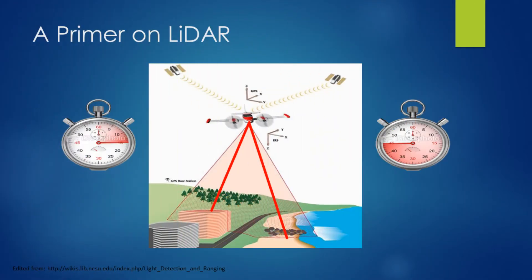First, a primer on LiDAR itself. LiDAR stands for Light Detection and Ranging. Essentially we have a high-precision GPS and an inertial measurement unit inside the aircraft which monitors the pitch, roll, and yaw and spatial location of the aircraft many thousands of times per second.